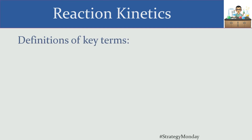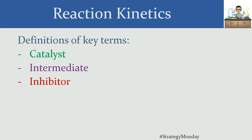Today we're going to define some key terms: a catalyst, what an intermediate functions as in the reaction, what inhibitors do, and how we identify something as a reactant or a product in a particular reaction. This answers the question of what role a molecule plays, and it's important to understand because adding or removing them from a process leads to different consequences.